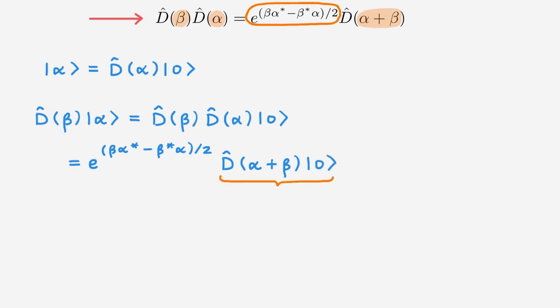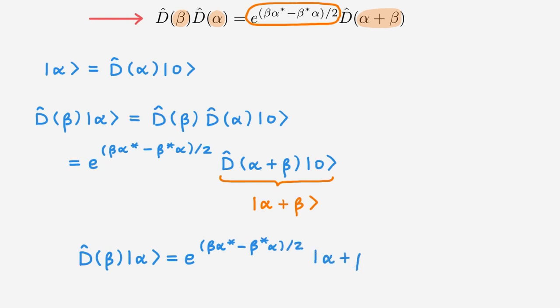And this is simply the coherent state |α+β⟩. The application of D(β) on a coherent state |α⟩ gives an irrelevant phase factor and generates another coherent state displaced by β compared to the original one — this is why we call this the displacement operator. These displacements may appear somewhat abstract; for example, in the context of quantum optics, they are displacements in the optical phase space.